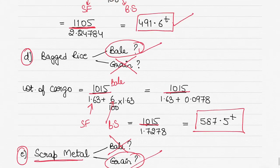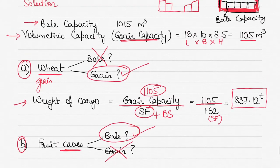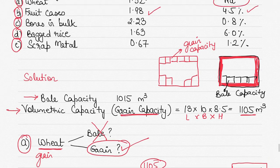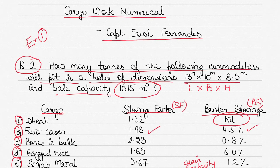That's how straightforward these questions are. The key is to understand the relationship between bale capacity and grain capacity, when to use each, and how broken stowage applies as a percentage of the stowage factor in calculating the weight of cargo from the volumetric capacity of the hold. Let me know if you have any questions, comments, or feedback — it helps me plan future videos and connect with fellow mariners.